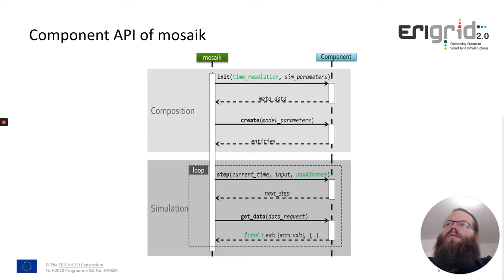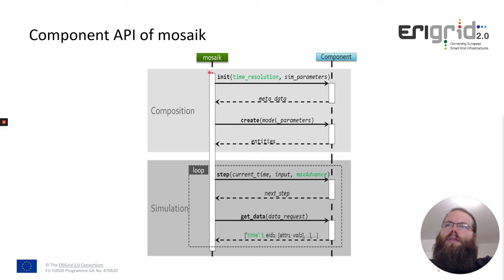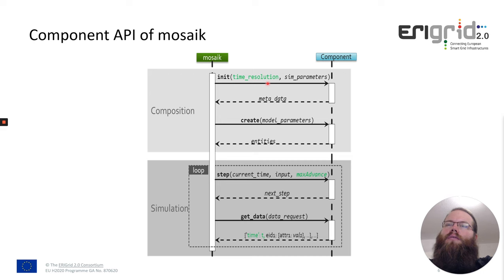The component API has two phases: first the composition and then the simulation. Here are shown the four most important calls of this API — there are some more, but these are the most important. On the left hand side we have Mosaic, on the right hand side we have the component. The first call is the init, which just initializes the simulator. Here we get information about the time resolution which can be used and some simulator parameters. The component can then do some initialization and send back the metadata.